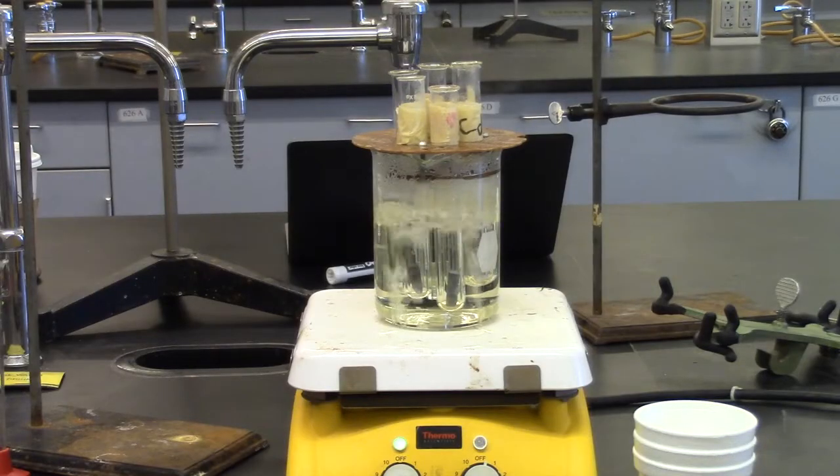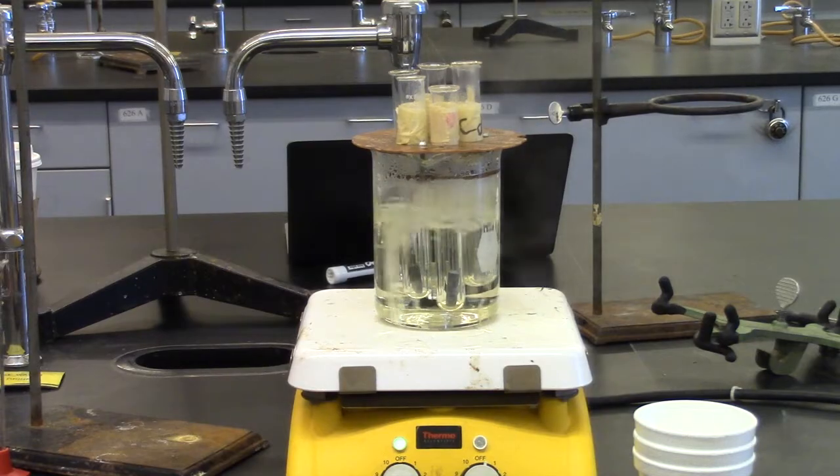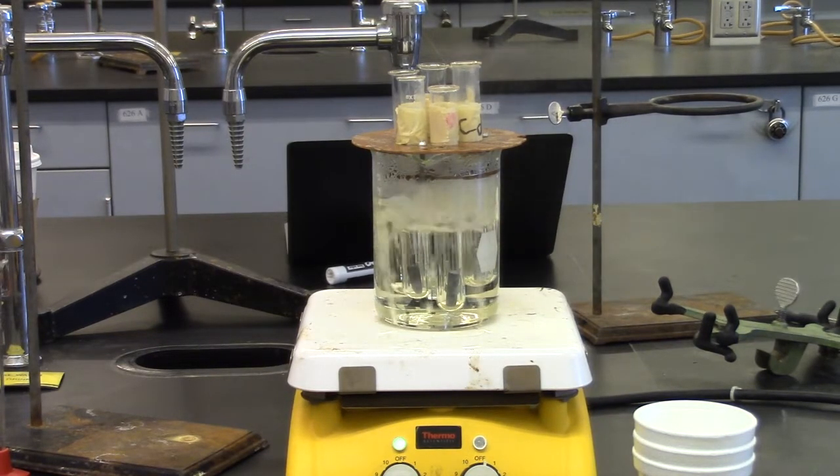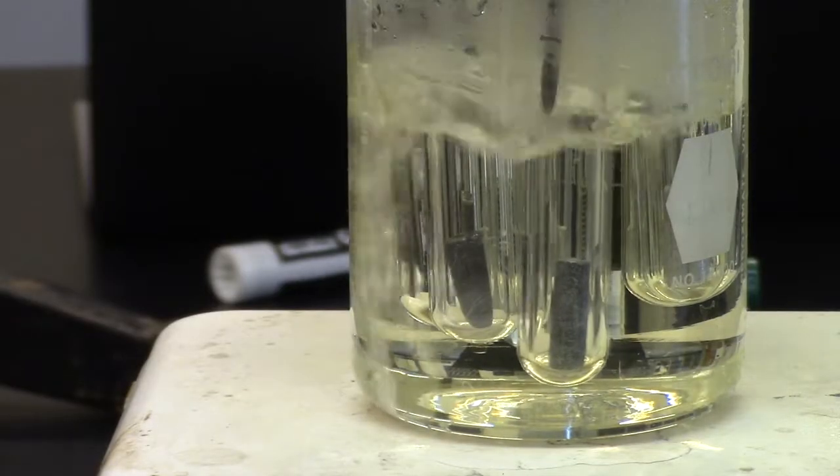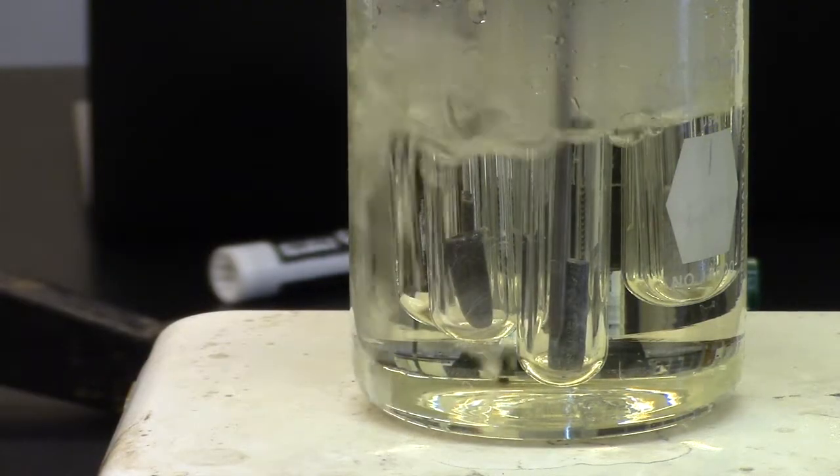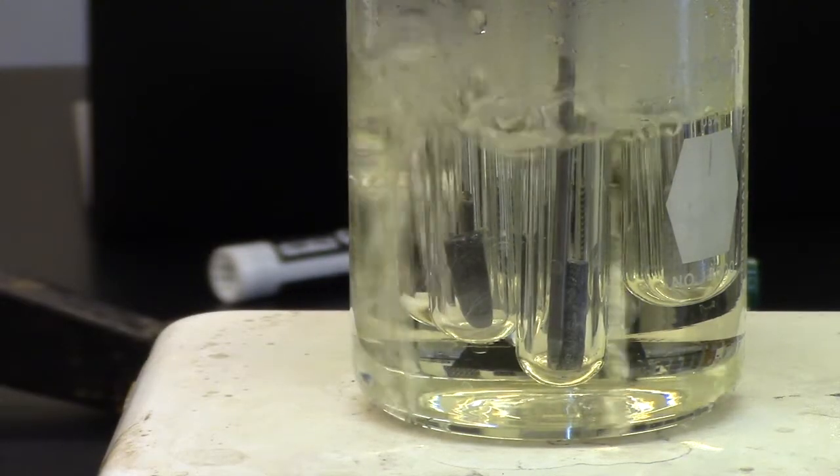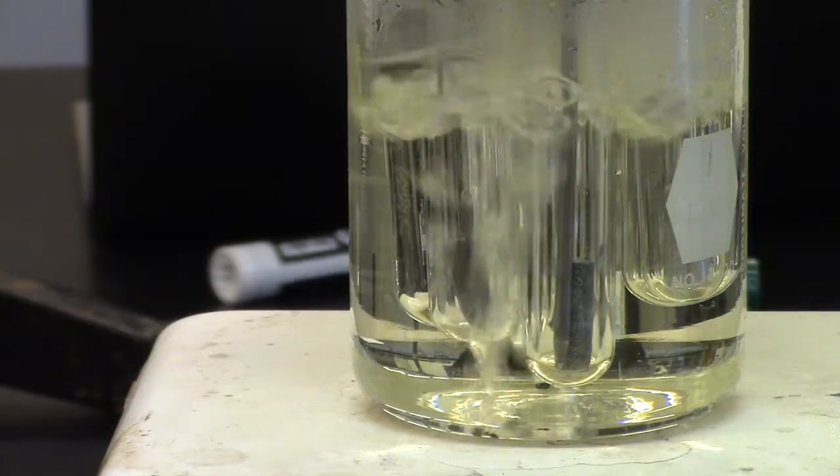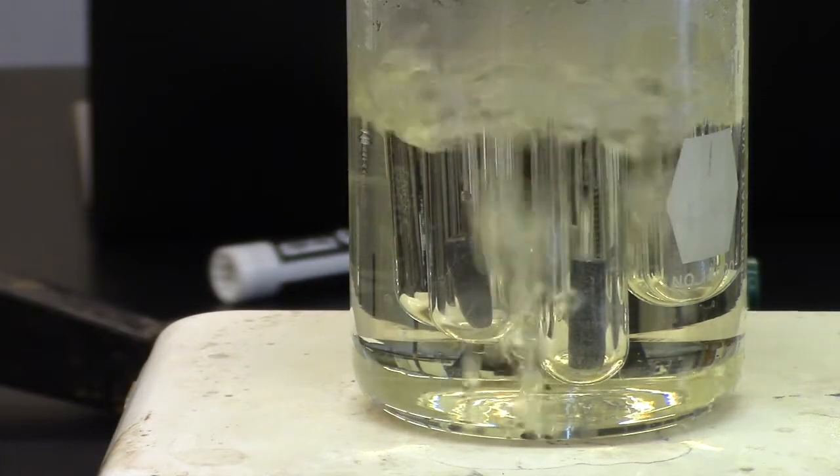Once the metals have been heated for 15 minutes, we will one by one add them to our calorimeter. We determine the temperature of the metals by measuring the temperature of the air around the metal inside the test tube. This temperature should be 100 degrees Celsius.